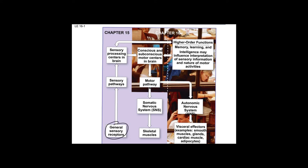In Chapter 15, we talked about the general sensory receptors and the sensory pathways that go up to the brain. We talked about areas where that's processed, like the primary somatosensory cortex, which receives that information — and you have the homunculus up there. The brain then decides what to do and exits through motor pathways. The motor pathways in Chapter 15 were the somatic nervous system pathways going out to skeletal muscles, but that's not the only motor pathway there is.